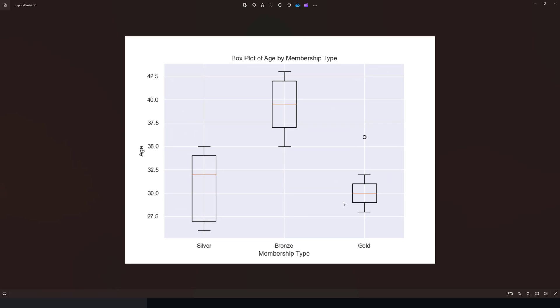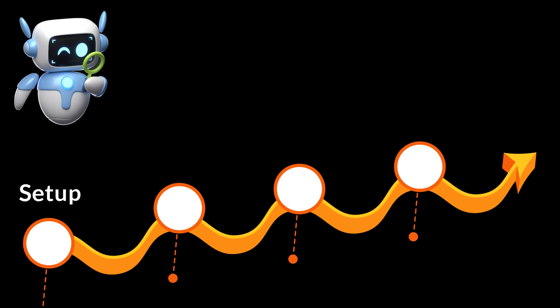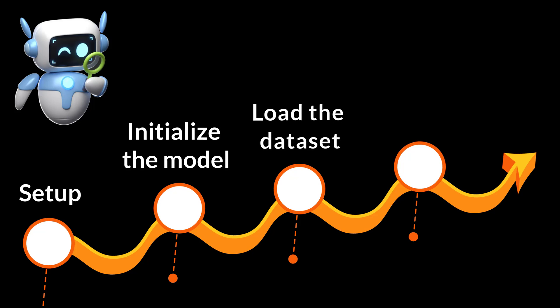Let's take a look at the topics we'll handle. First, we'll create a virtual environment and then install the tools we'll use. Next, we'll initialize LLaMA 3 with Ollama. After that, we'll load the dataset and then we'll build the app. Lastly, we'll chat with the dataset using Pandas AI agent.